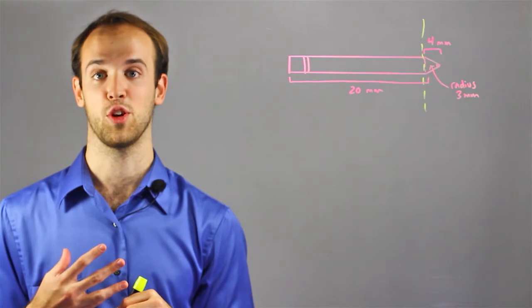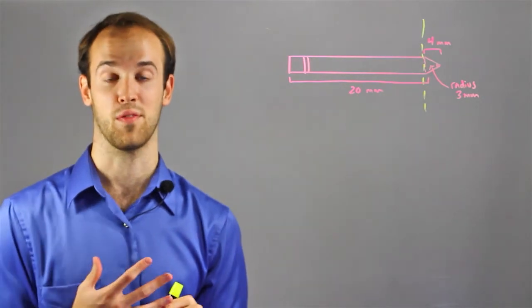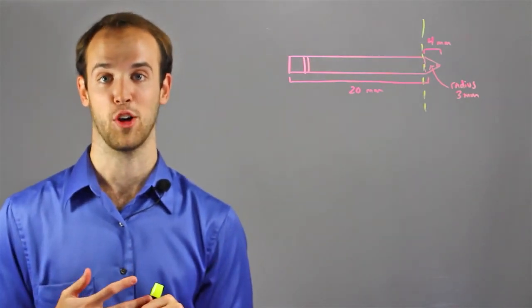So, if I can find the volume of the cylinder and the volume of the cone and add them together, that should give me the volume of the pencil.